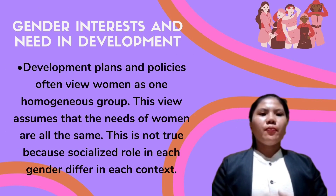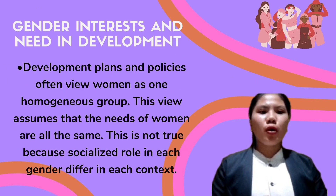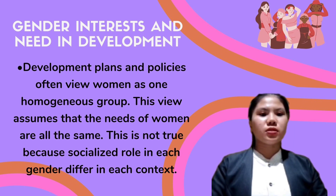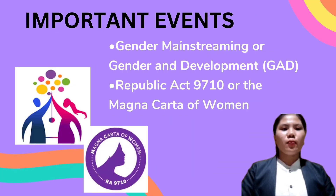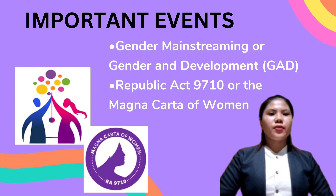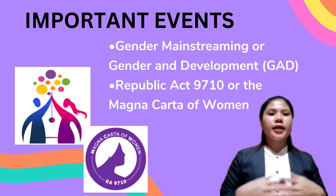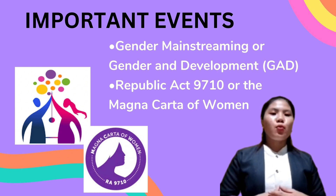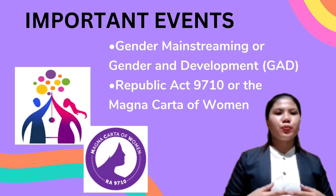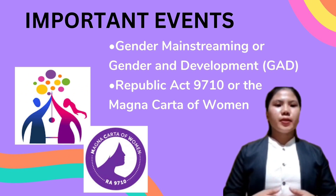Moser's framework helped prioritize and address the strategic and practical needs of women, especially the poor. Development plans and policies have historically tended to view women as a homogenous group, assuming they have the same needs and experiences. But this fails to see the diversity of women in terms of politics and their social, economic, and cultural backgrounds. That is why the Gender and Development (GAD) policy and the Magna Carta of Women were enacted. GAD ensures that the government pursues gender equality so that both women and men can benefit from development. The Magna Carta of Women is a law that specifically benefits women — it seeks to eliminate discrimination, protect women, recognize them, and promote their rights.